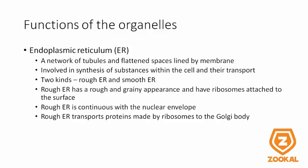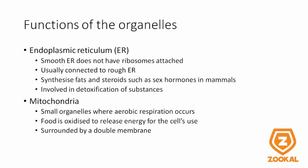There are two kinds, mainly rough ER and smooth ER. The rough ER has ribosomes attached to its surface, which is what gives it its rough and grainy appearance, and the rough ER is continuous with the nuclear envelope. The rough ER transports proteins made by the ribosomes to the Golgi body. The smooth ER does not have ribosomes attached, and is usually connected to the rough ER. The smooth ER synthesizes fats and steroids such as sex hormones in mammals, and is involved in the detoxification of substances.